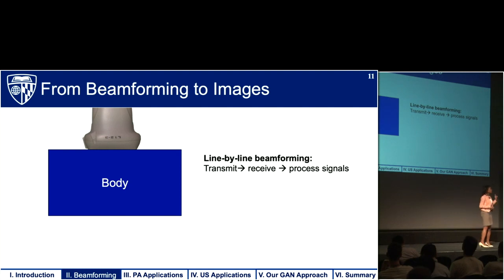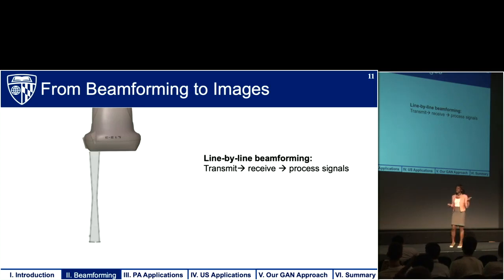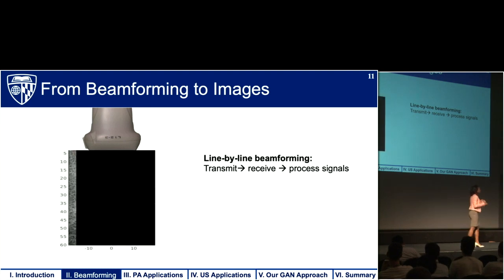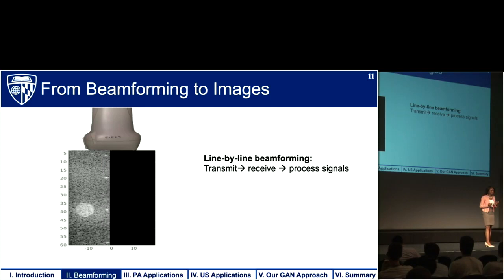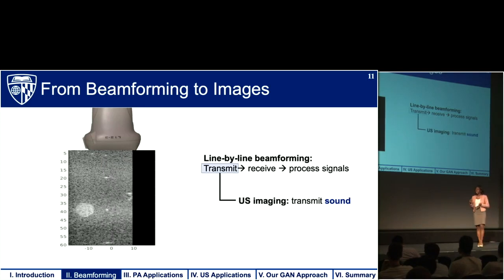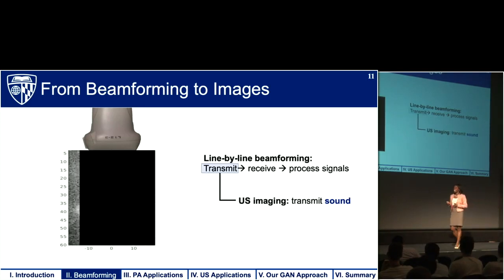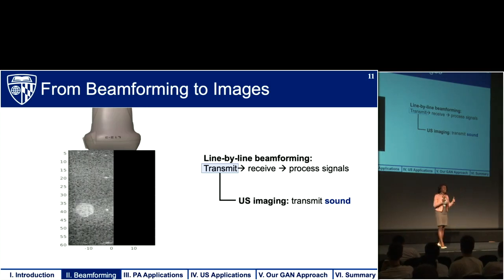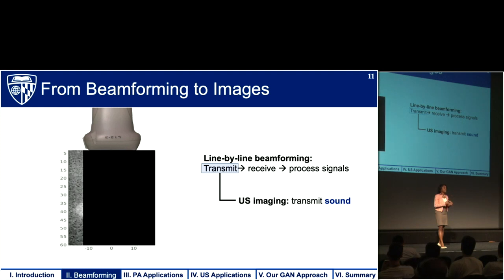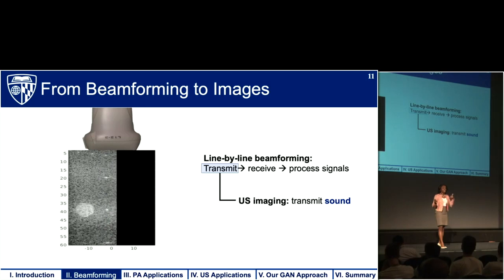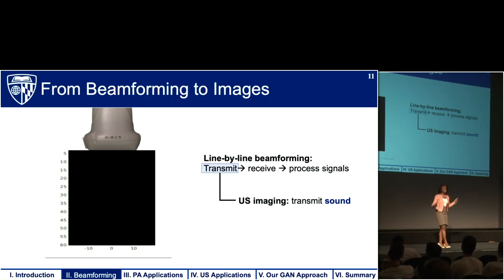To go from beamforming to images, we use a mathematical formulation to focus the beam at different locations along the aperture, receive the echoes, and build up an image line by line. We transmit sound and receive sound, performing the same concept to focus the energy of the received signals on both the receiving and transmit ends — so we have both transmit and receive beamforming.